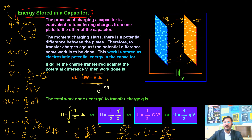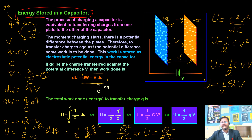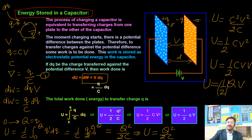We can write further expressions: since Q = CV, we get U = C²V²/(2C) = ½CV². Also, since CV = Q, we can write U = ½QV. The significance of the factor ½ is that 50% of the work done is stored as energy and 50% is wasted as heat energy when charging the capacitor.